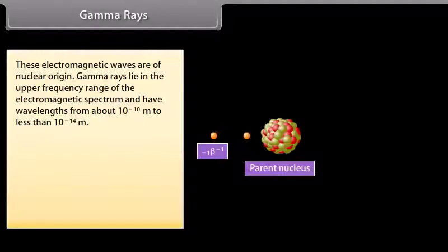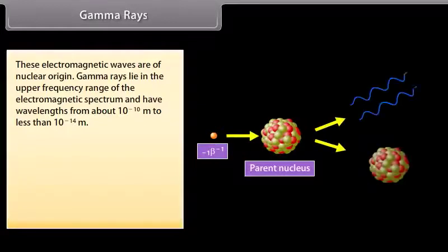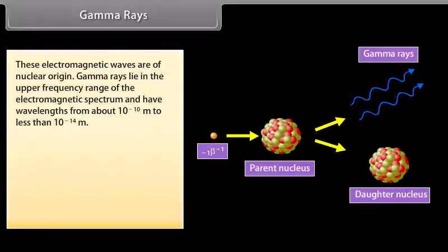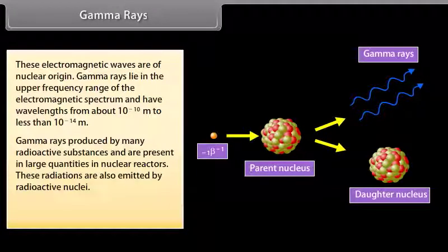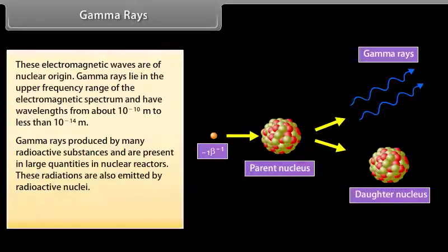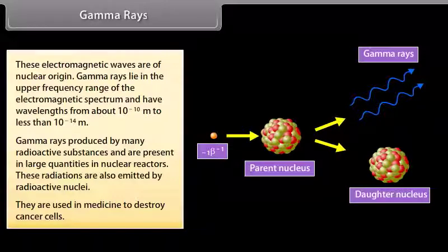Gamma rays. These electromagnetic waves are of nuclear origin. Gamma rays lie in the upper frequency range of the electromagnetic spectrum and have wavelengths from about 10 raised to the power minus 10 meter to less than 10 raised to the power minus 14 meter. Gamma rays produced by many radioactive substances and are present in large quantities in nuclear reactors. These radiations are also emitted by radioactive nuclei. They're used in medicine to destroy cancer cells.